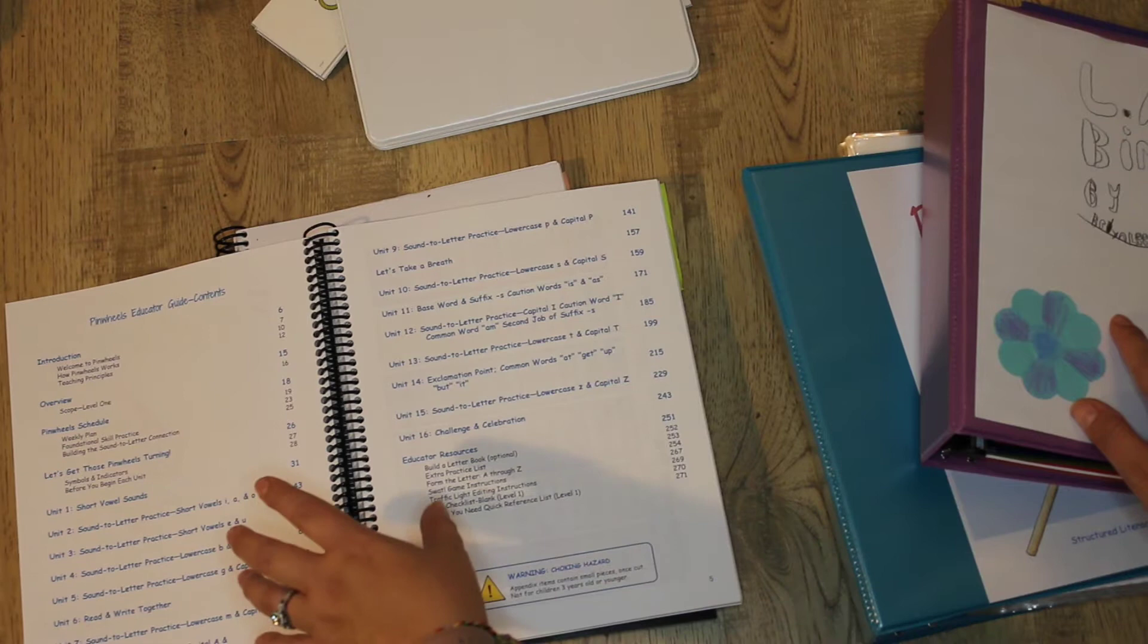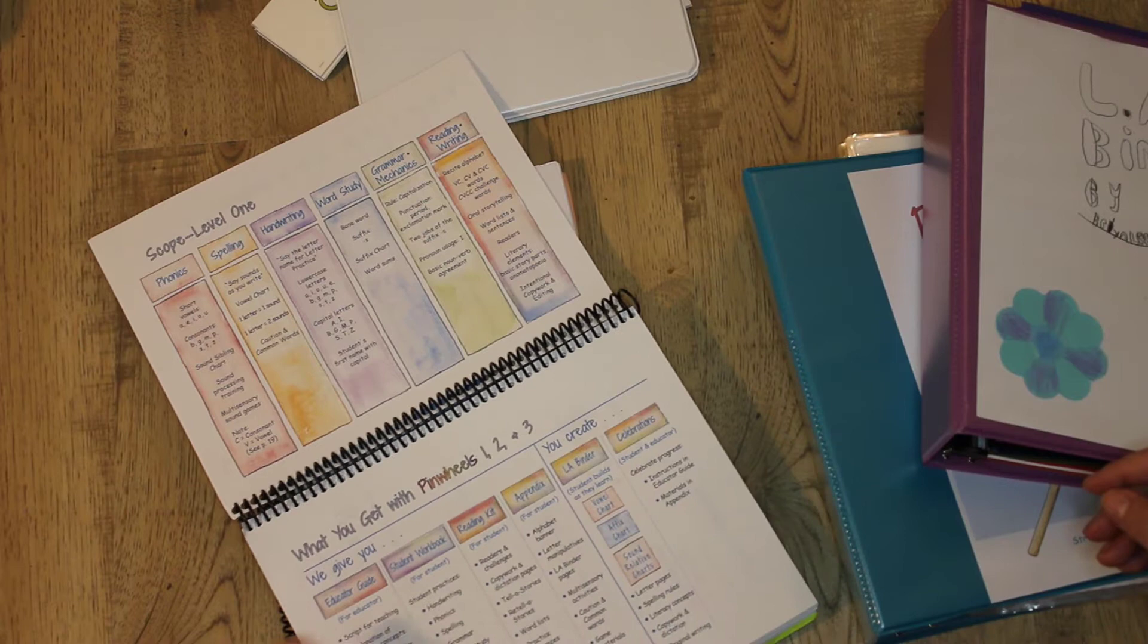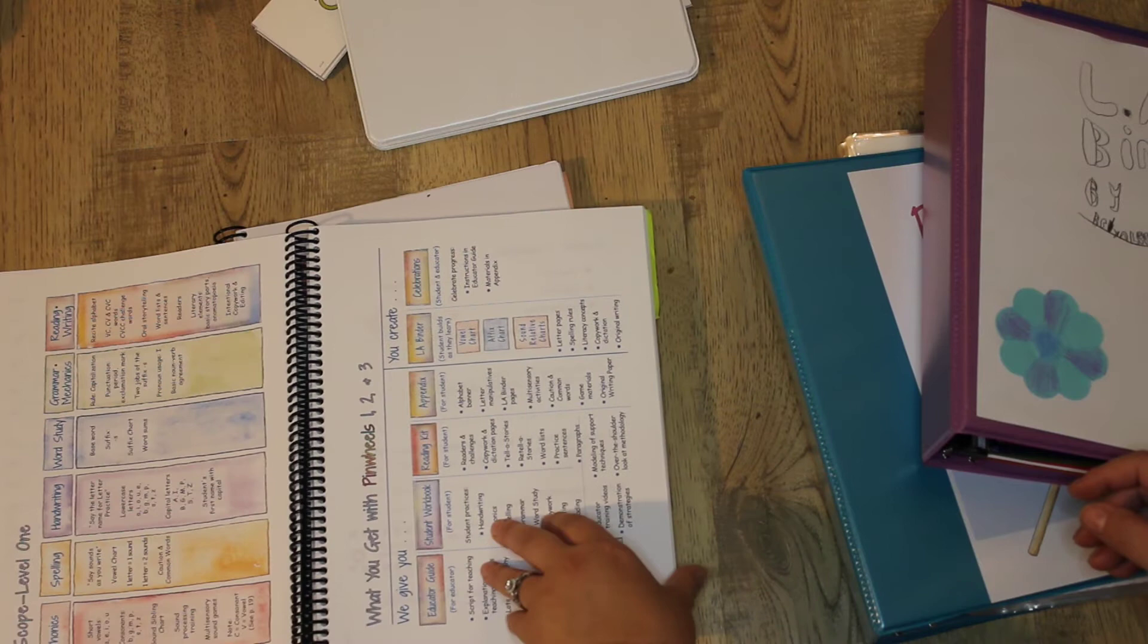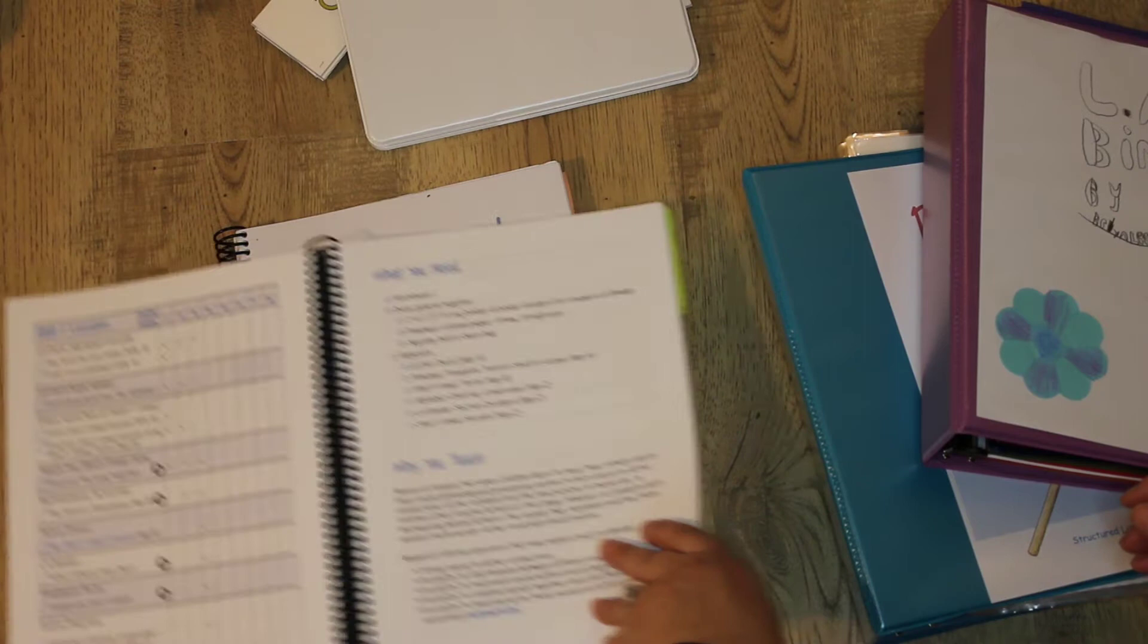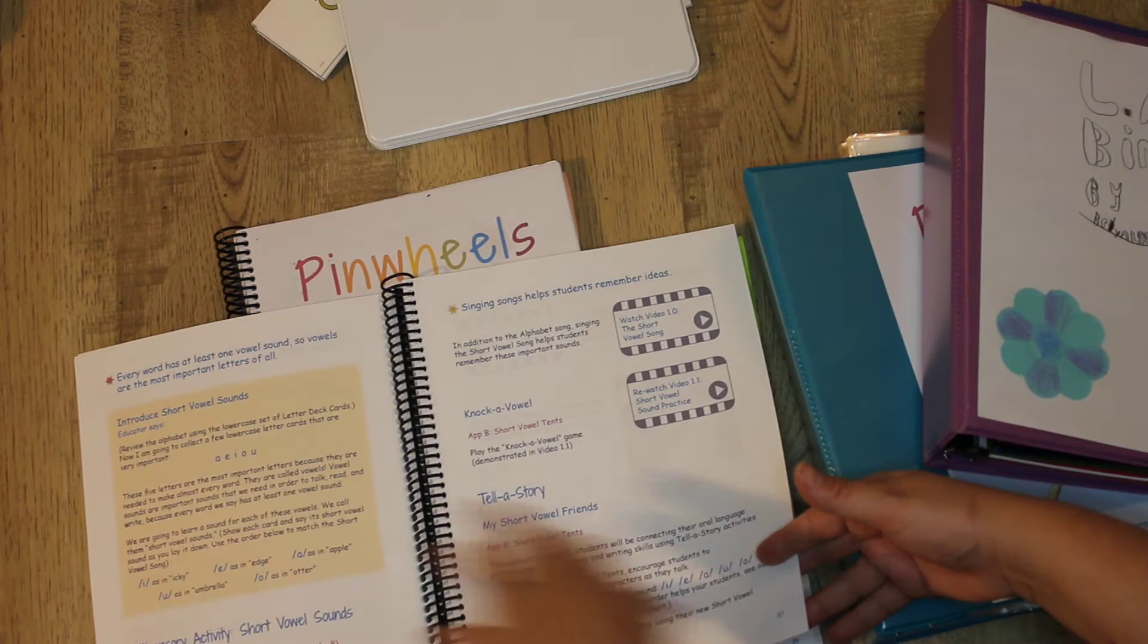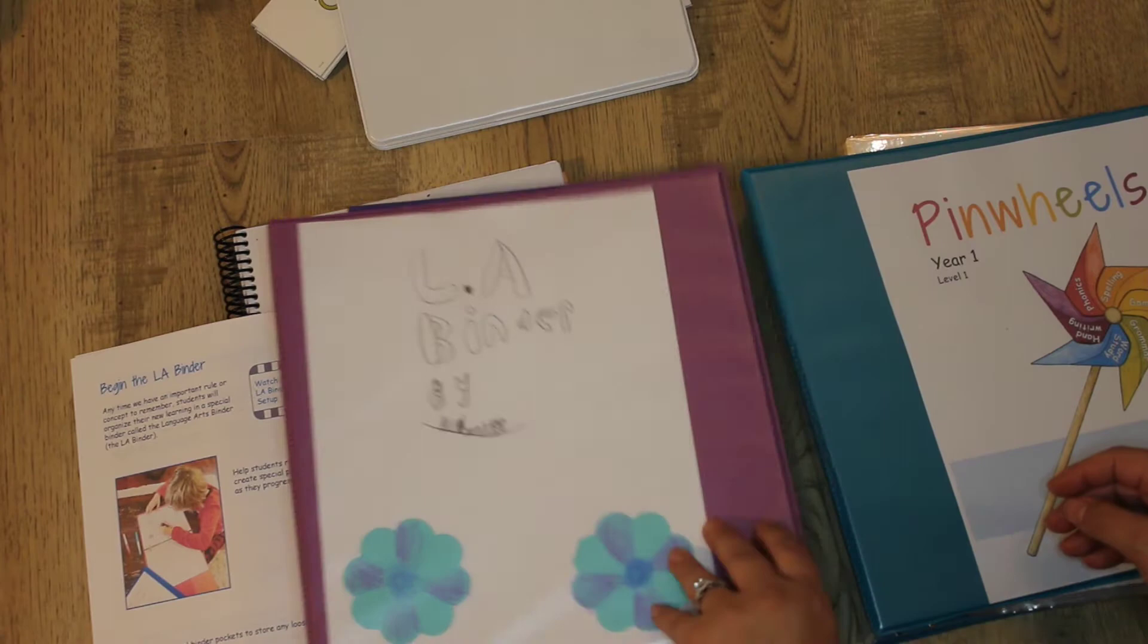Like everything else it starts with a unit breakdown and gives you a scope and sequence. Something I really like about Pinwheels is it includes everything: phonics, spelling, handwriting, word studies, grammar, reading and writing. It includes the whole gamut. It's really an all-in-one program which I really like. Then it begins with the first unit. The way it's written shows you how many days you should spend on each thing and what you should cover. The yellow boxes are your script that you read, so it's pretty open and go.